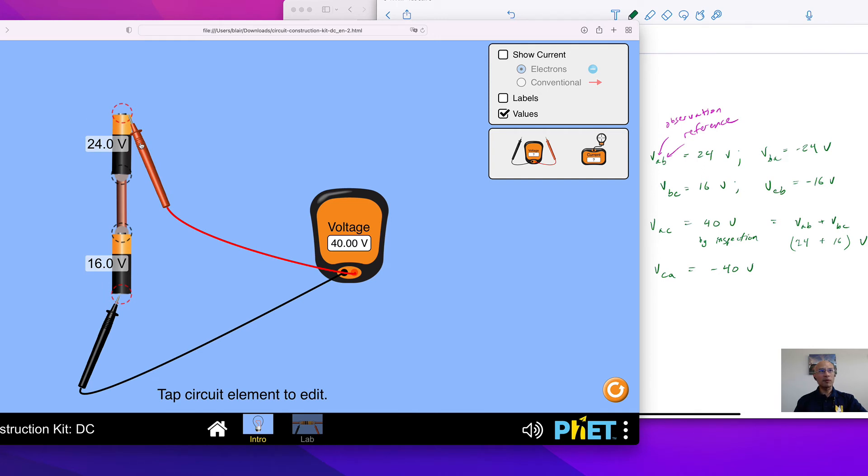The next step here is to think about what happens when we turn one of these batteries around. That is to say, we reverse its polarization. So let's do that.